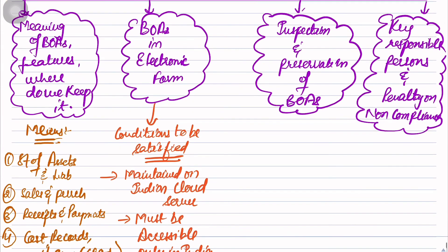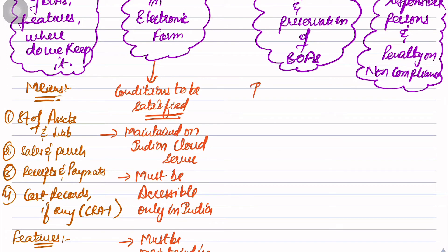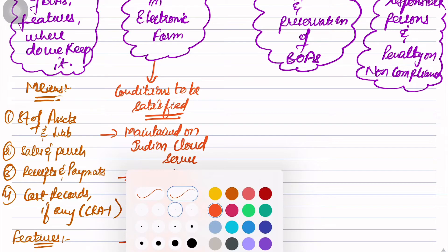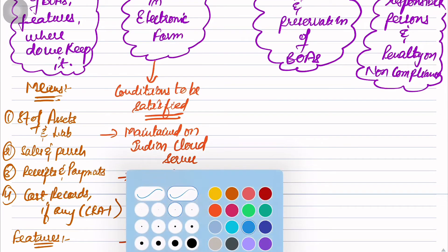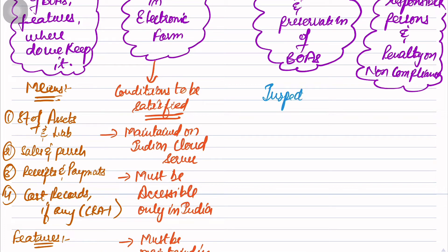Now what is the third column? Inspection. Let's first do inspection, then we'll do preservation. Who can inspect Books of Accounts? Note: Books of Accounts, not financial statements. Members are prohibited; directors are allowed. You are not aware that members are prohibited - members can inspect financial statements, but they can never inspect Books of Accounts.